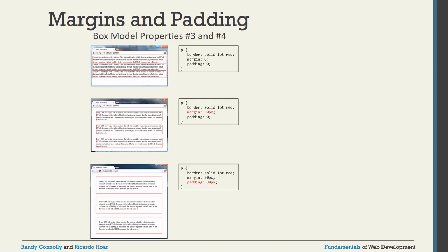In the first example, margin is zero and padding is zero — you see a solid red border of 1pt. In the second example, margin is 30px and padding is still zero. With margin at 30px, all four corners of the boxes have spacing from the screen edge. In the third example, padding is 30px — the border is still visible, but now the content inside the box has space from the top, bottom, left, and right of the box due to padding.